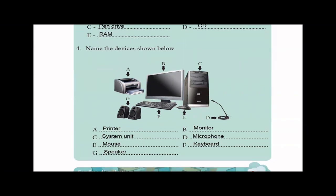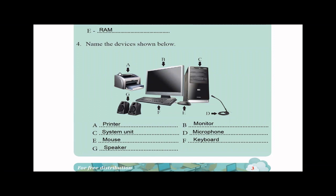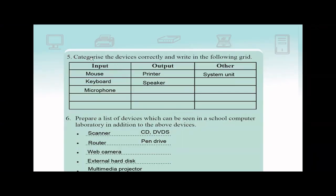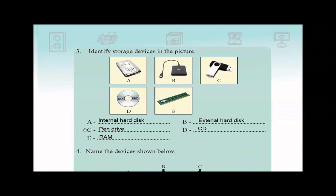Next one: name the devices shown below. A is a printer. B is the monitor, right? And C is the system unit. D, can you identify what is D? It's a microphone. Then comes E is the mouse, F is the keyboard, G, there are speakers. So this is how you have to name the devices. And they are asking to categorize the above mentioned devices correctly and write it in the grid. So we had three input devices: mouse, keyboard, and microphone. This categorization should be done based on the above.